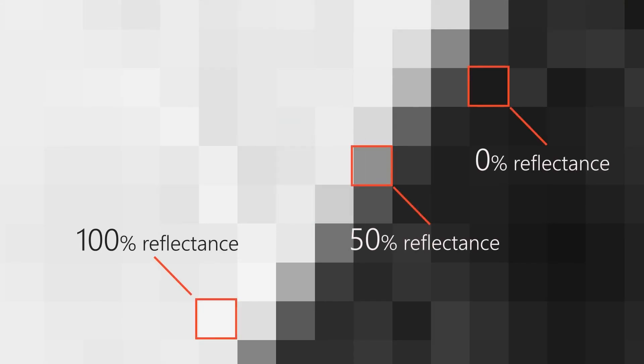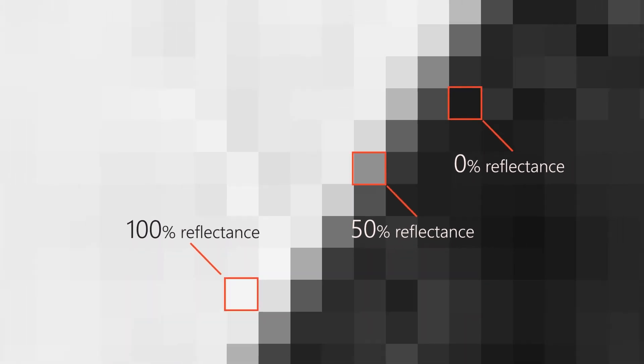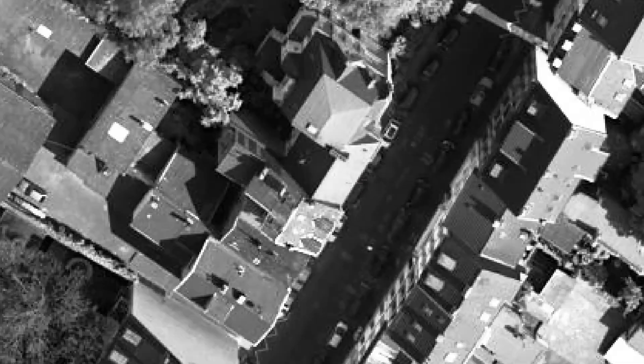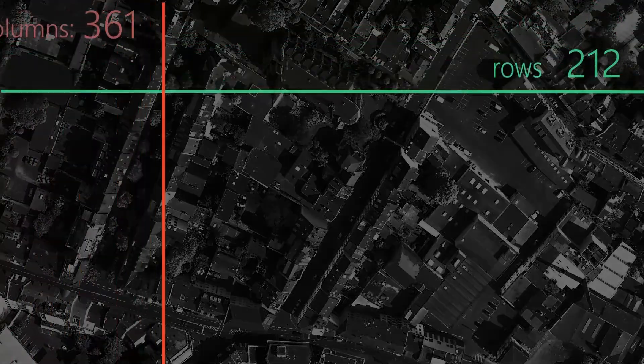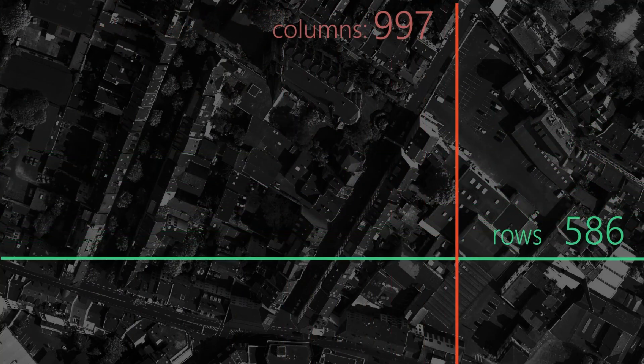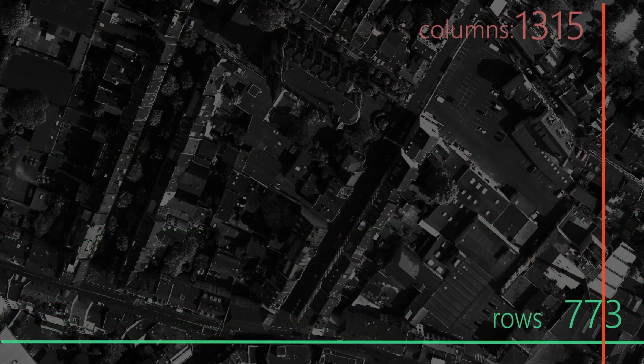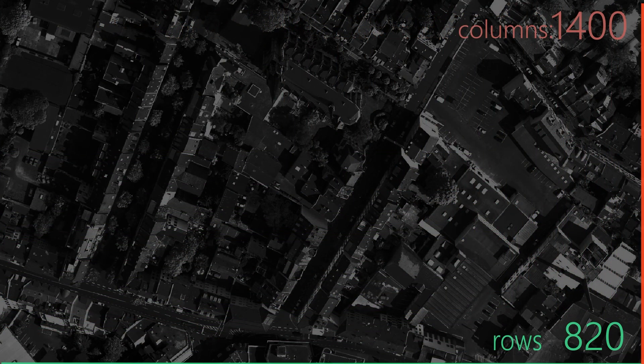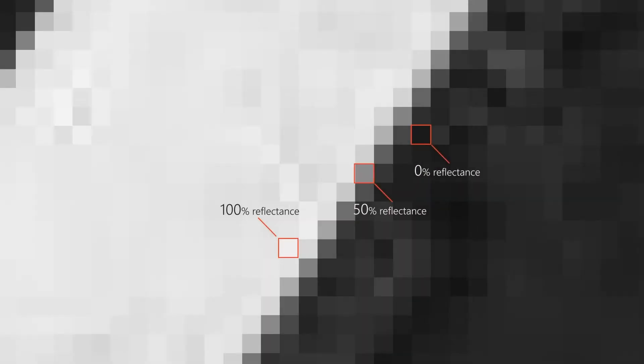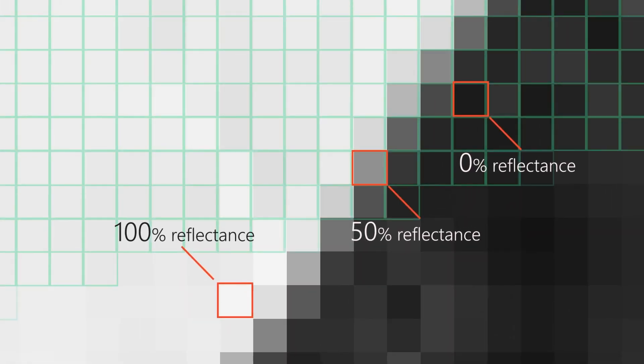But what is a pixel? Most satellite data represent the reflectance of sunlight from the Earth's surface. We call this raster display because each image is a grid of thousands of rows and columns filled with the different reflectance values of the corresponding area of the Earth. We refer to the individual cells of these grids as pixels.